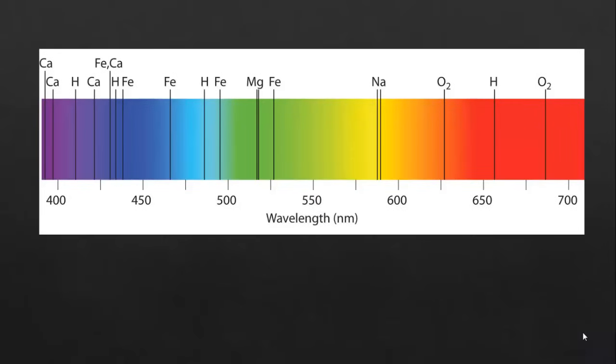Stars such as our sun are so hot that they emit light at all frequencies, so we should see a full spectrum. However, if we look closely at the spectrum for our sun, we would see these mysterious dark lines. These are absorption line spectra.